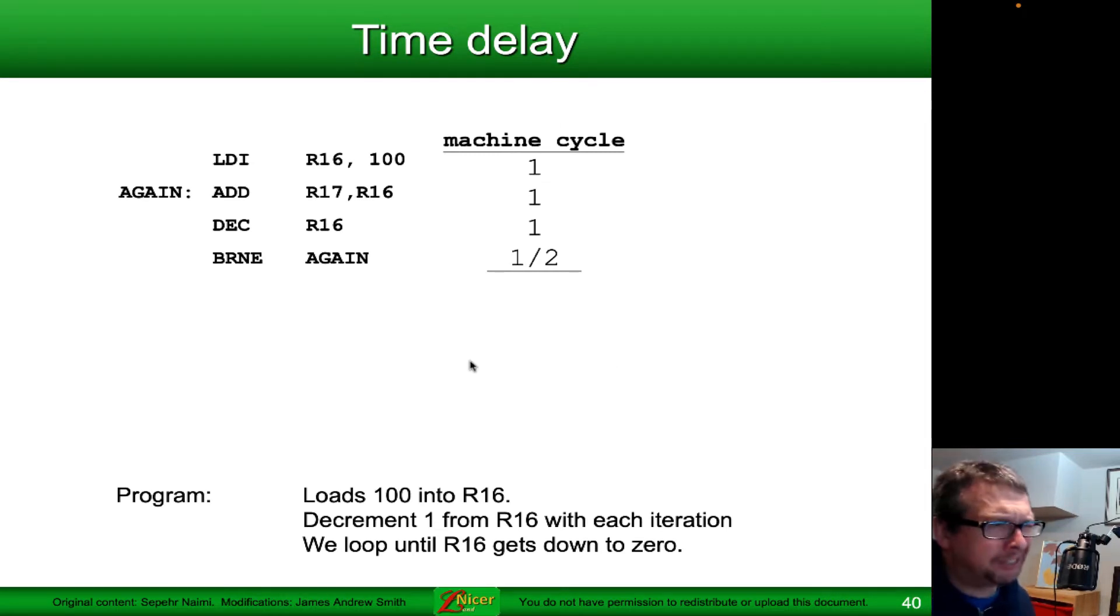It gets more interesting when we add in branching, because the branch operations can sometimes take one instruction cycle and sometimes take two. In this particular case, this program loads the value 100 into register R16. Then it loops using that label again. It does an add, a decrement, and then it tests and creates a branch on that fourth line.